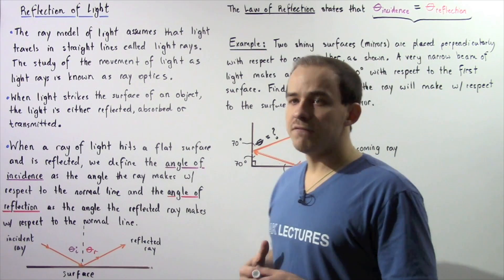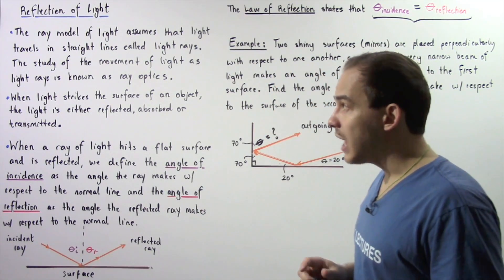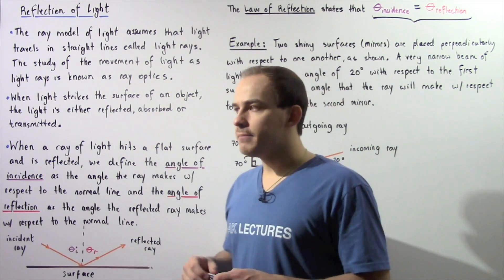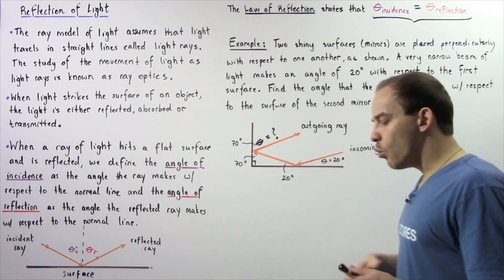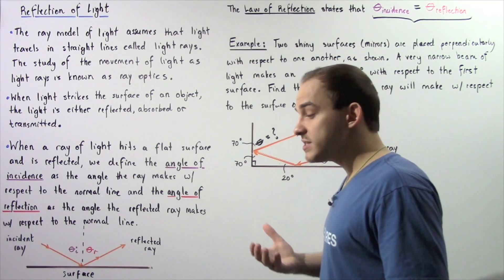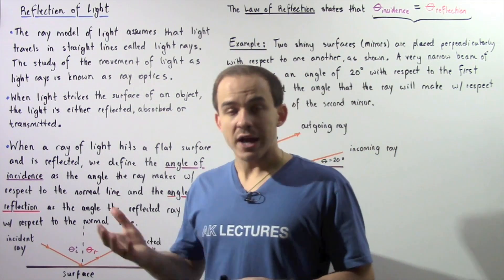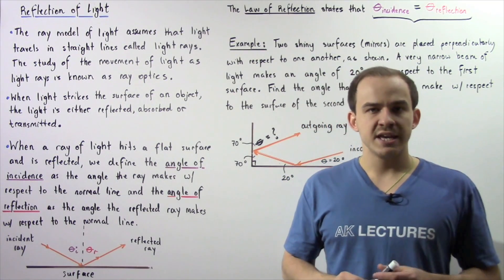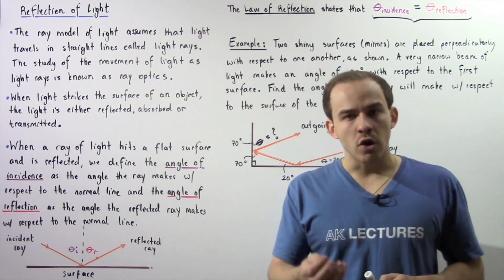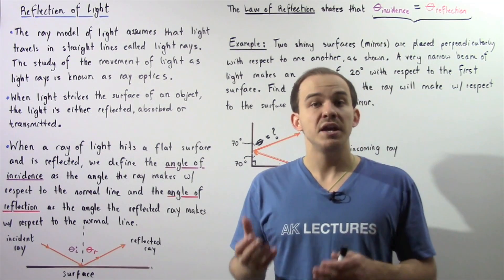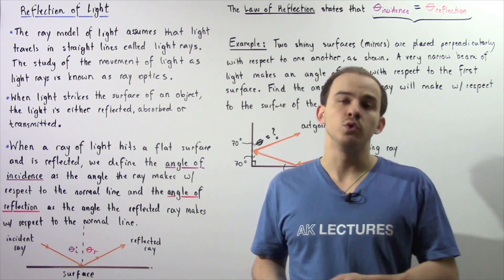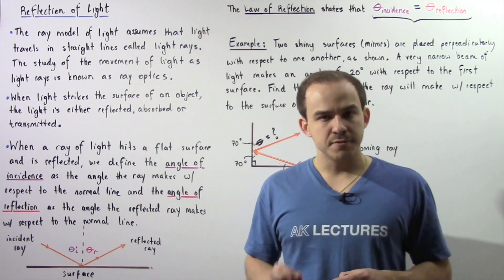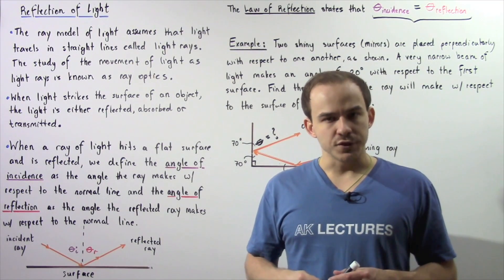The study of movement of light in the form of light rays is known as ray optics, or simply geometric optics. Whenever visible light strikes the surface of an object, one of three things can take place: the light can either reflect off of that surface, it can be absorbed by the molecules inside that surface, or the light can be transmitted through that surface.